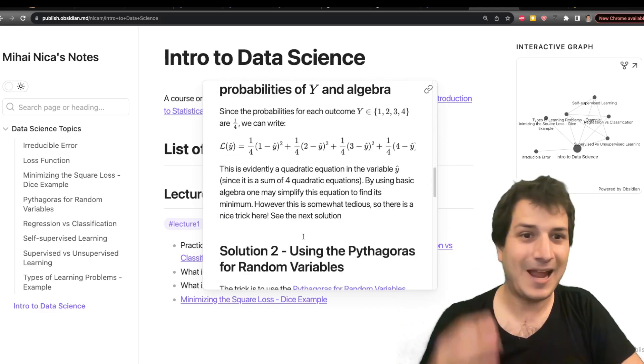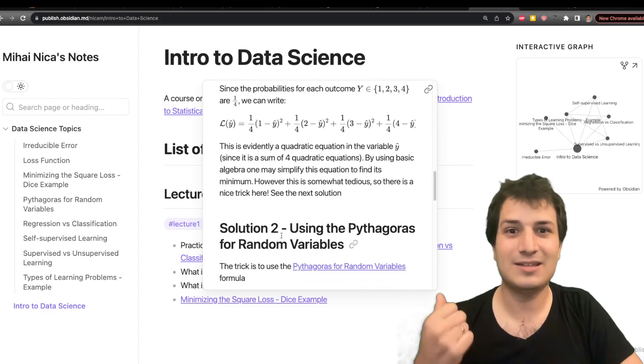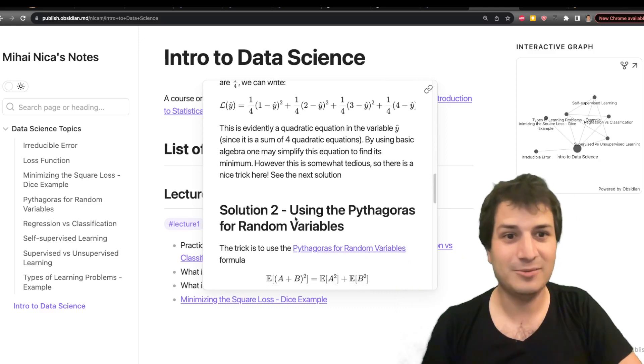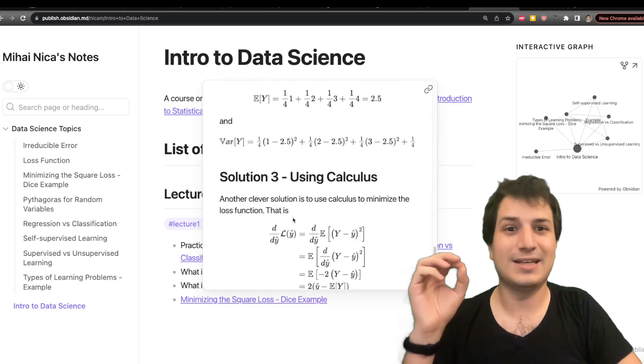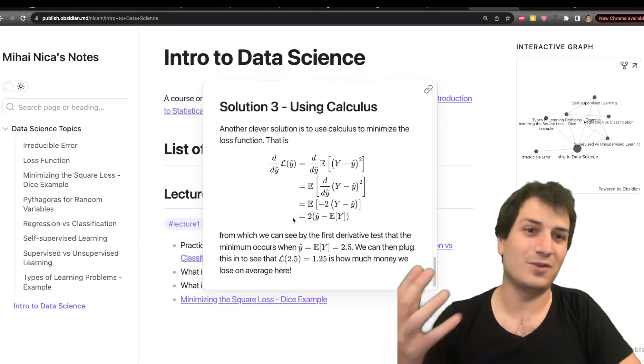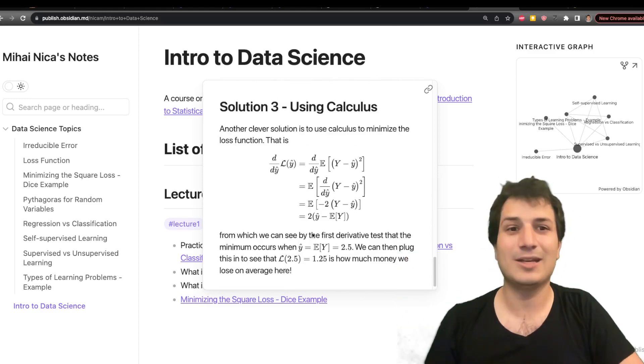And after class somebody came and said I have another solution that uses calculus. So I did this one with Pythagoras for random variables is what I did in the video if you watch that. But somebody else came with this calculus method which is also very nice. So if you want to read that you can read it on the website.